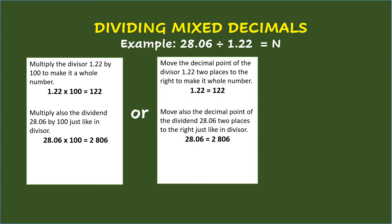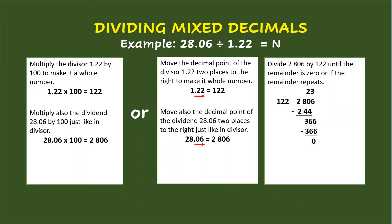Or, you can move the decimal point of the divisor 1.22 two places to the right to make it a whole number. So, 1.22 will become 122. Then move also the decimal point of the dividend 28.06 two places to the right, just like with the divisor. So, 28.06 will become 2,806. Finally, divide 2,806 by 122 until the remainder is zero or if the remainder repeats. So, 2,806 divided by 122 equals 23.